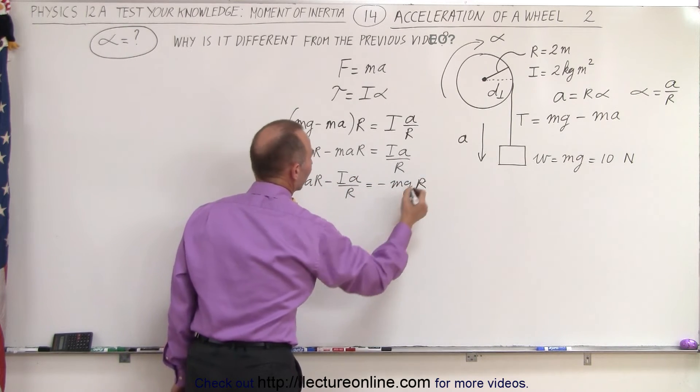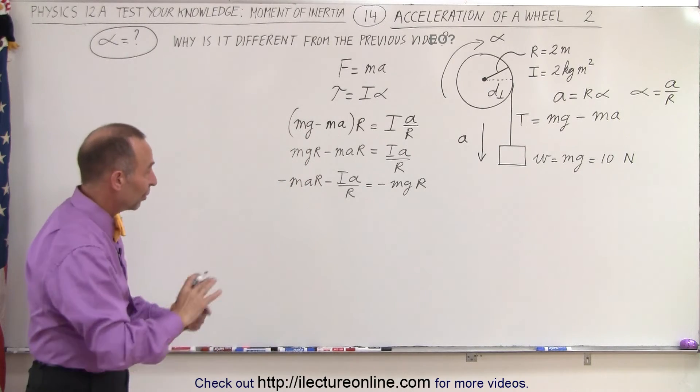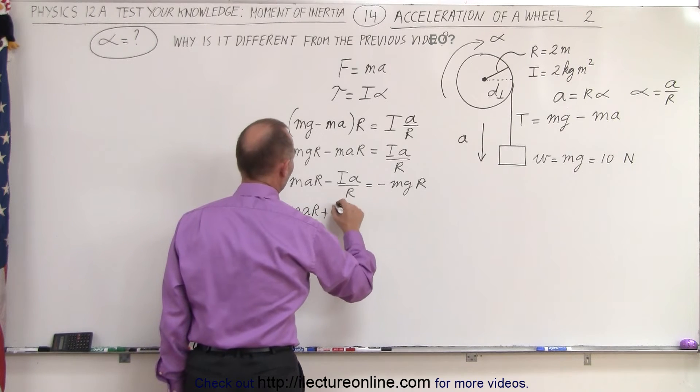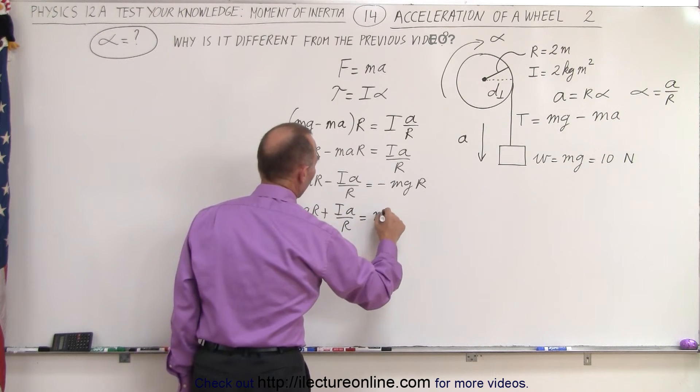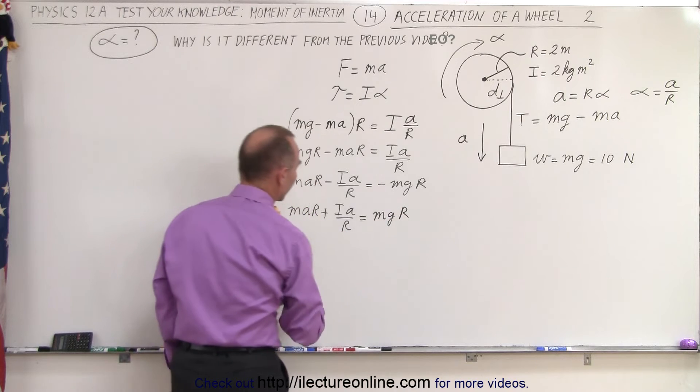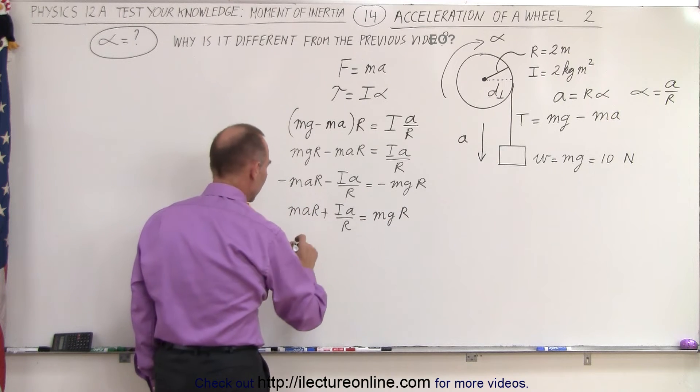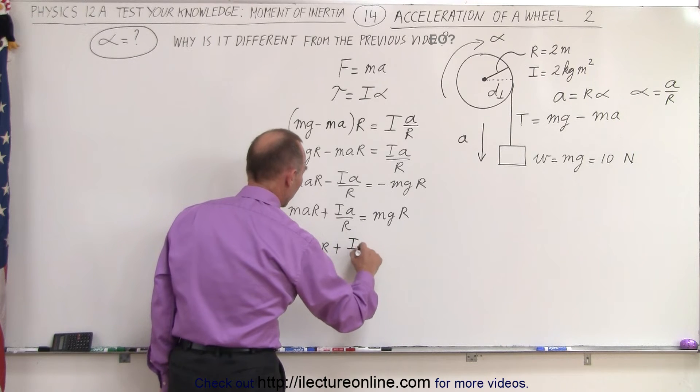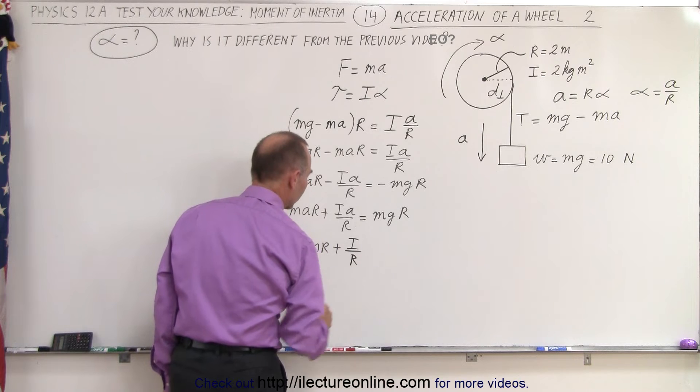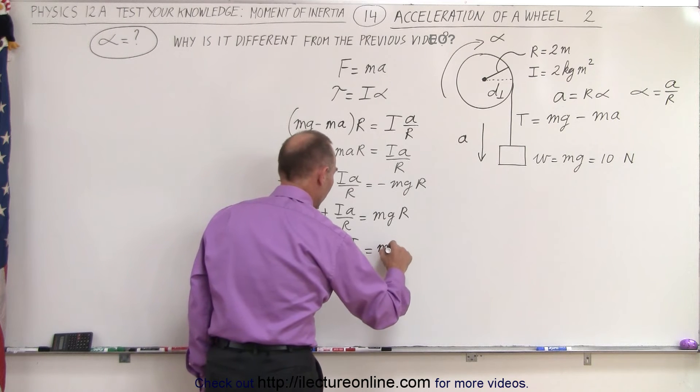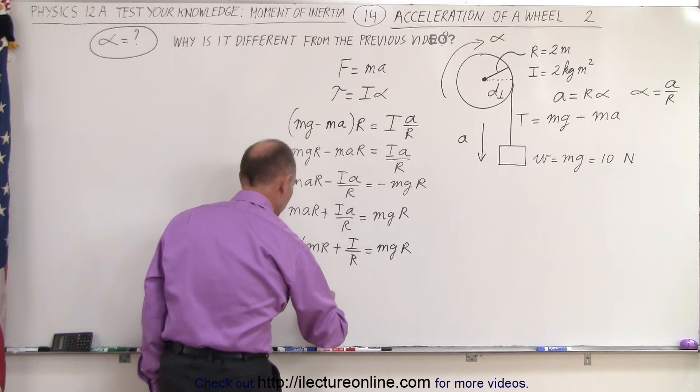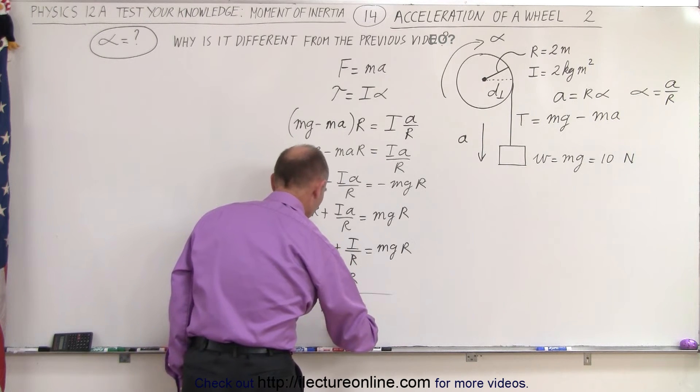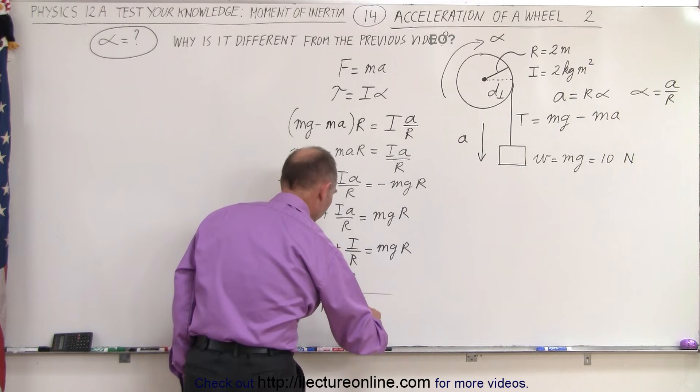And then of course I would like to change everything to a positive, so multiply both sides by negative one. So I have MAR plus IA over R equals MgR. Then I can factor out an A, so this becomes A times (MR plus I over R) equals MgR. And finally, the acceleration equals MgR divided by (MR plus I over R).